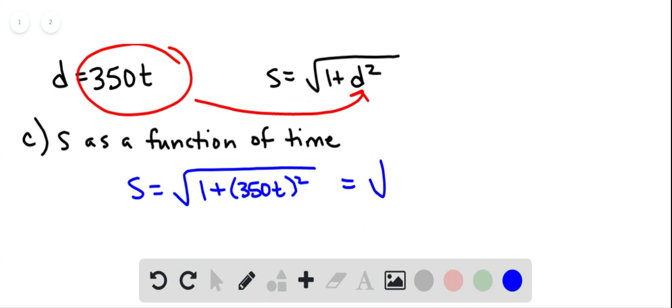And if we want to simplify that, we can go ahead and find out what 350 squared is. Grab a calculator for that. That would be 122,500. So we have s is the square root of 1 plus 122,500t squared.